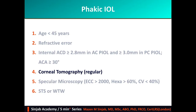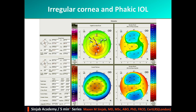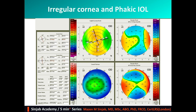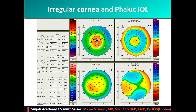The fourth point is corneal tomography. To obtain the best results and optimum visual acuity after phakic IOL implantation, corneal tomography should be perfectly regular. However, an irregular cornea is not a contraindication for phakic IOL implantation, as long as the corrected visual acuity is good enough and there is a reasonable difference between uncorrected and best corrected visual acuity — such as in mild cases of keratoconus, small ablated optical zones, post-myopic, post-astigmatic, and post-hyperopic treatment.